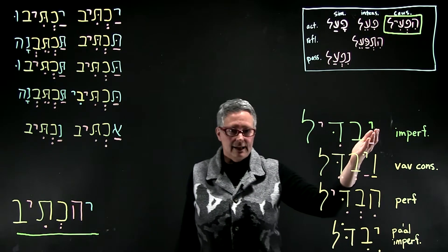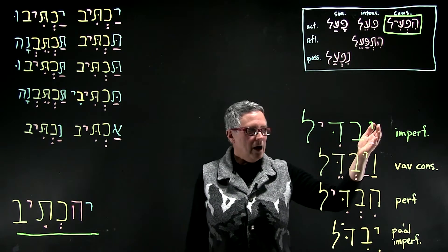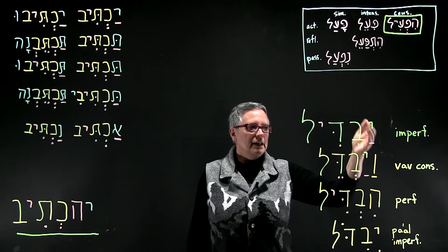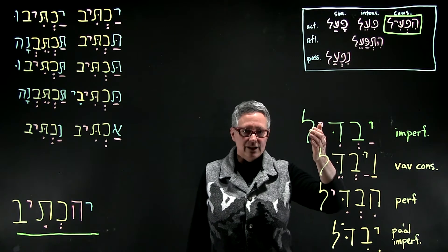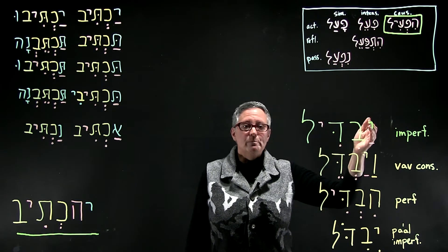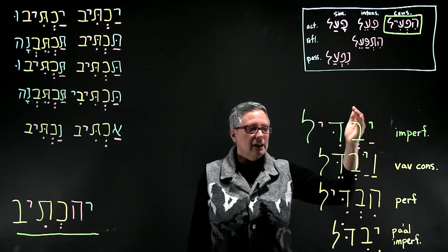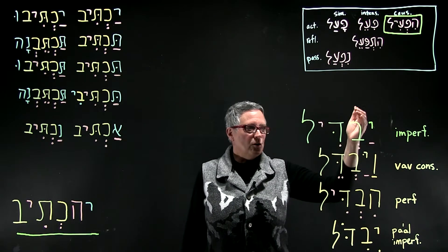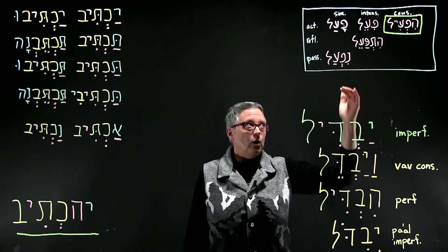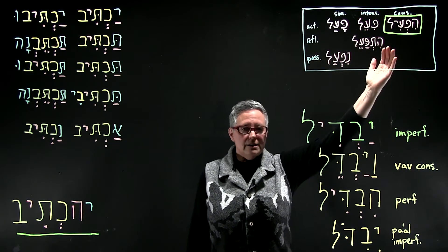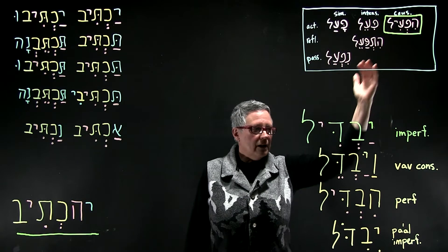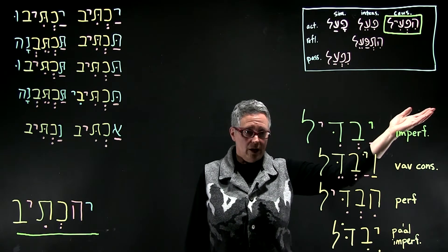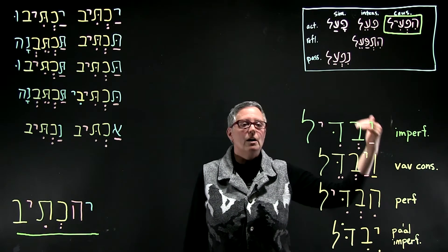Here is an example of a Hi-feel imperfect: yavdil, which means 'he will separate.' So we're using an active and a causative meaning, which is 'cause a separation' or 'separate.'